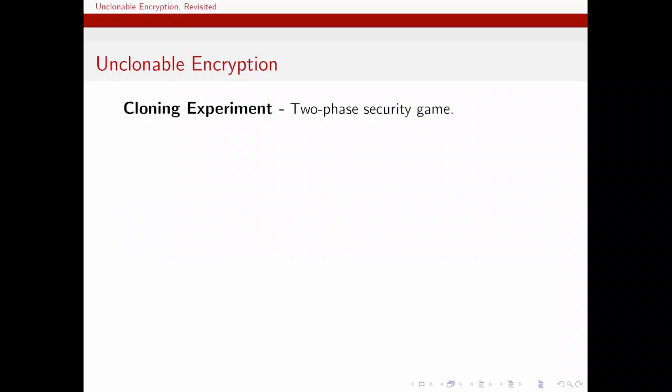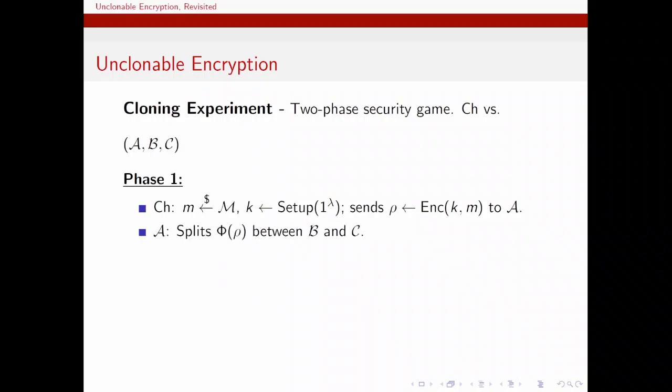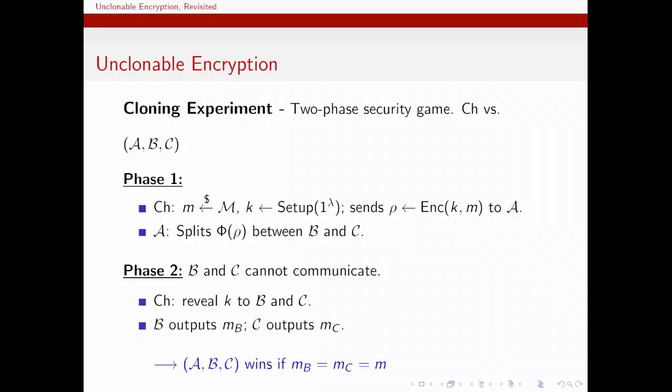The cloning experiment consists of two phases. In the first phase, the challenger creates encryption of a random message and sends it to Alice. And then Alice applies a quantum channel to split the ciphertext between two physically distant registers, which belong to Bob and Charlie. The second phase is the challenge phase, in which Bob and Charlie are not allowed to communicate. After learning the key from the challenger, Bob and Charlie need to both guess the message correctly. This captures the intuition that they both preserved the decryption functionality simultaneously.